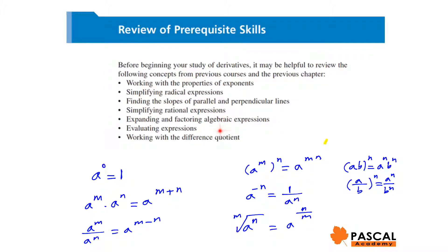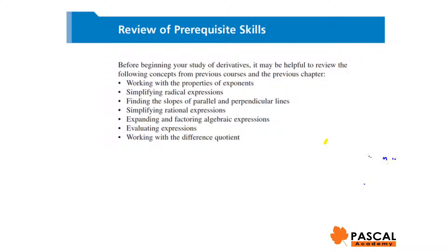Expanding and factoring of algebraic expressions. We've worked a lot in previous courses and also previous chapter. Two important points that we have to know is a plus b to the power of n, which is called binomial theorem. a to the power of n plus n times a to the power of n minus 1 times b, plus n times n minus 1 over 2, times a to the power of n minus 2 times b squared,